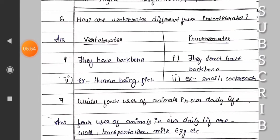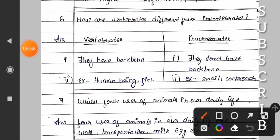Question number six: How are vertebrates different from invertebrates? Vertebrates: They have backbone. Example: human beings, fish, etc. Invertebrates: They do not have backbone. Example: snail, cockroach, etc.